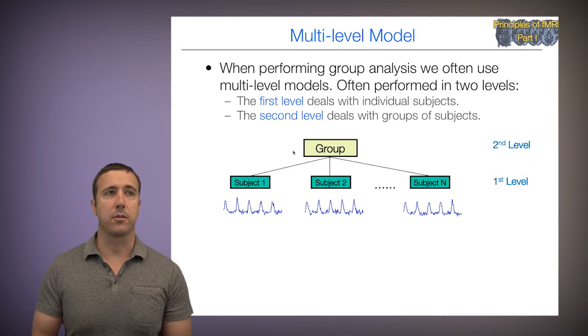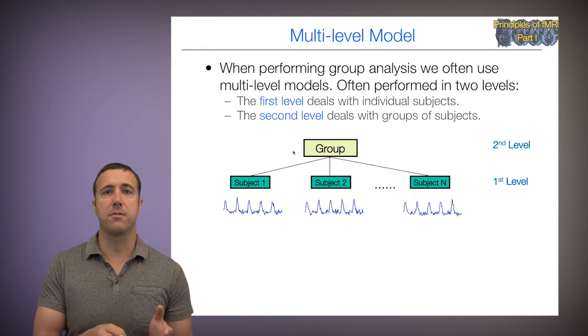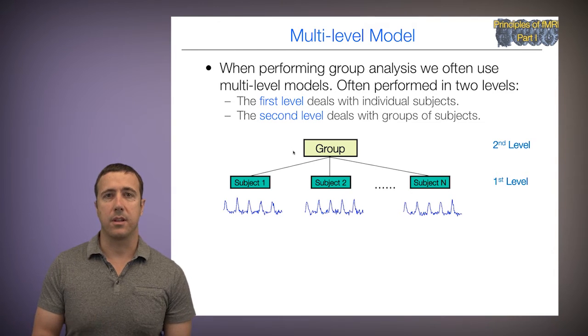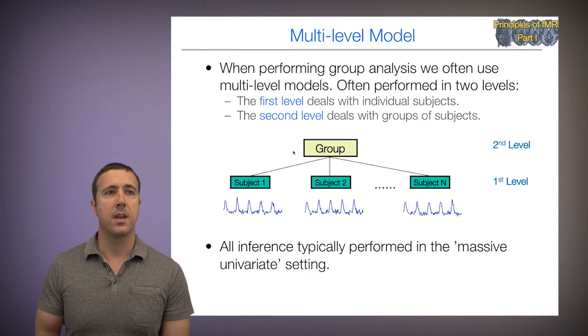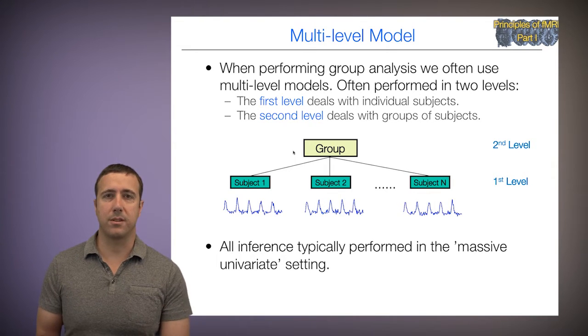So this is a schematic of a group where we have a model on the time series within each subject, that's the first level, and those are nested within the group. And again, all inferences here are performed in the massive univariate setting, so we're still dealing with an analysis at one voxel.